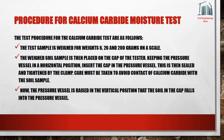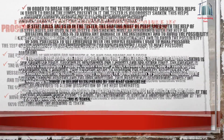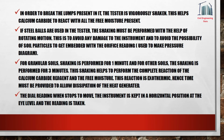The pressure vessel is raised to a vertical position so that the soil in the cap falls into the pressure vessel. To break any lumps, the tester is vigorously shaken, helping the calcium carbide react with all the free moisture present. If steel balls are used, the shaking must be performed with a rotating motion to avoid damage to the instrument and to prevent soil particles from becoming embedded in the orifice.